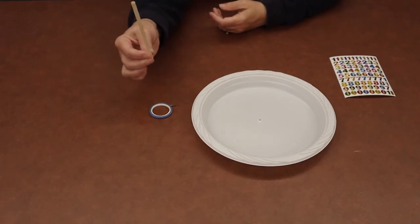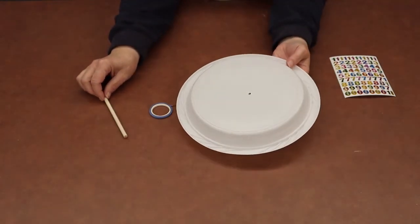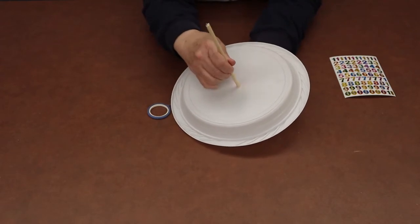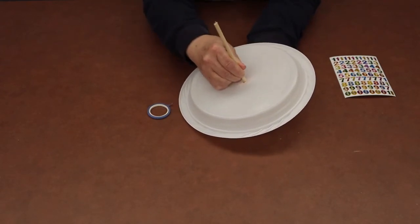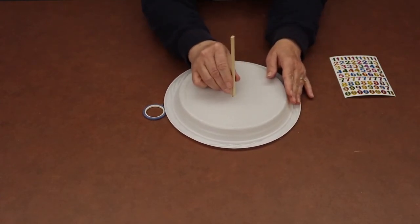We're going to take our dowel, and then we're going to take our plate and turn it upside down. We're just going to poke the dowel through the hole in the plastic plate and just poke it through so it stands up.